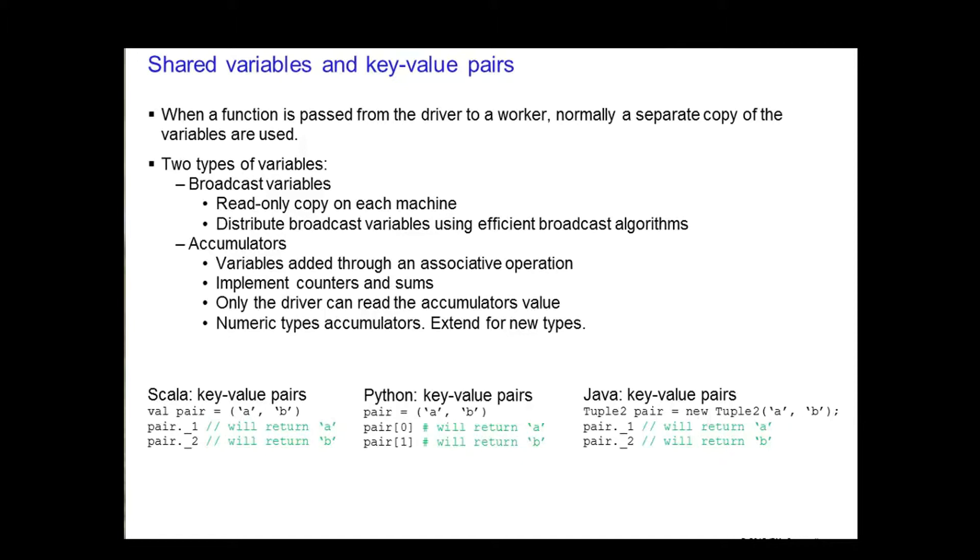Spark supports numeric types, but programmers can add support for new types. As an example, you can use accumulator variables to implement counters or sums as in MapReduce.